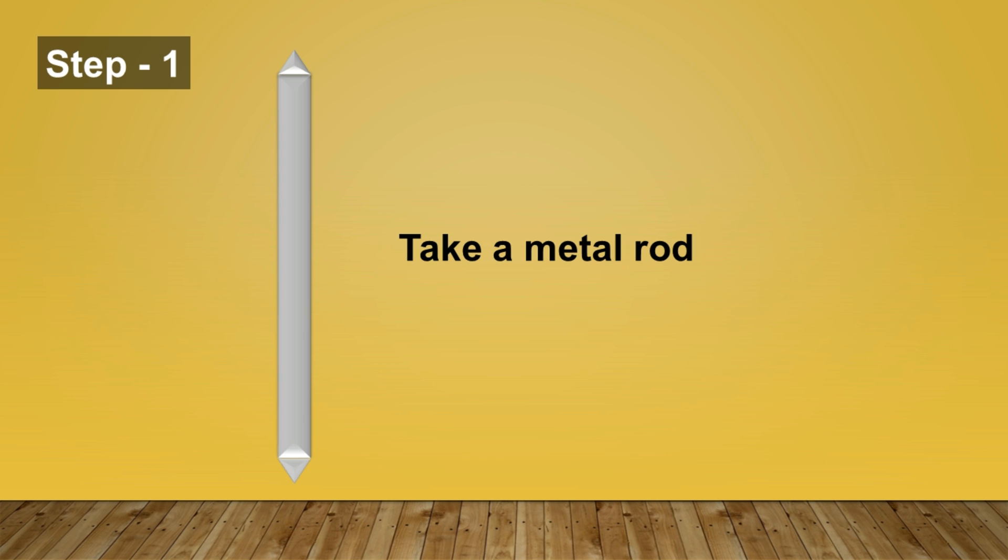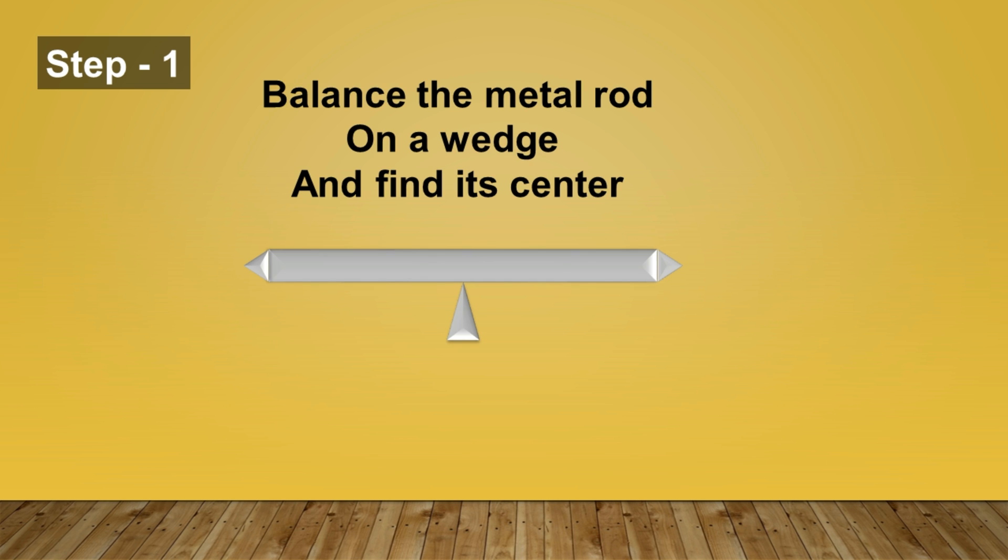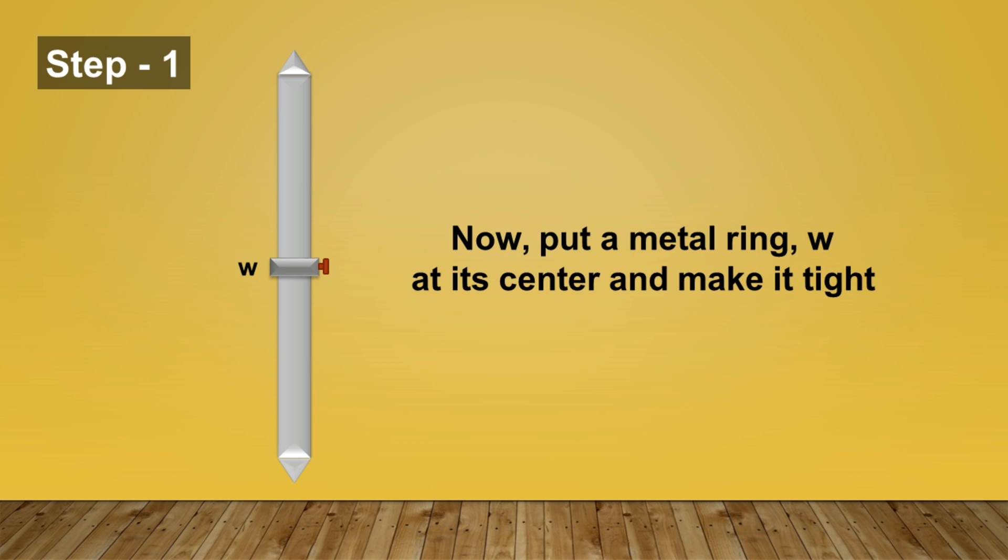Initially we will set up the Kater's pendulum for our measurement. In step 1, take the metal rod and balance the metal rod on a wedge and find its center point. Now, put a metallic ring W at its center and make it tight.